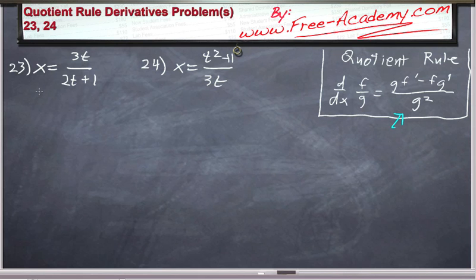We need to make a little bit of modification for these problems because in these problems we have x as a function of t. In this quotient rule here I've had d by dx. We can just as easily write this as d by dt. So basically what it says now is we're taking the derivative of f over g with respect to t, and this is assuming that f and g are both functions of t.